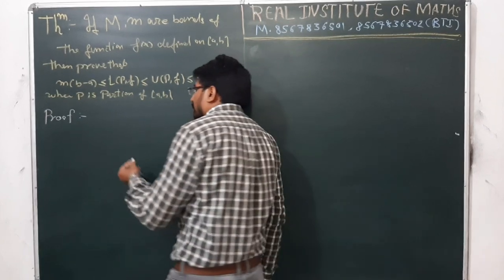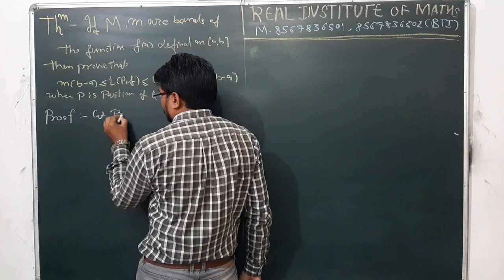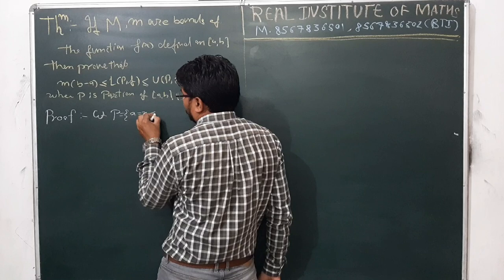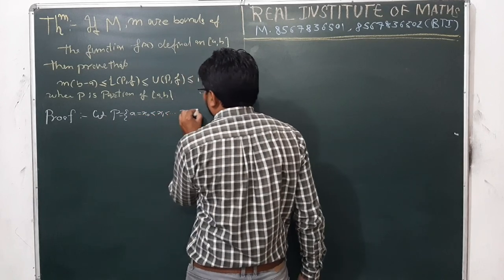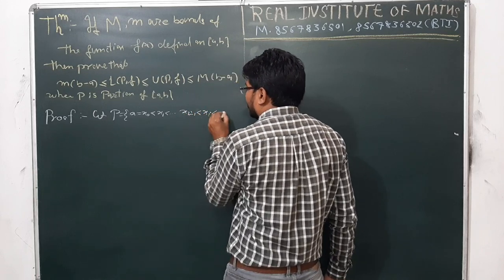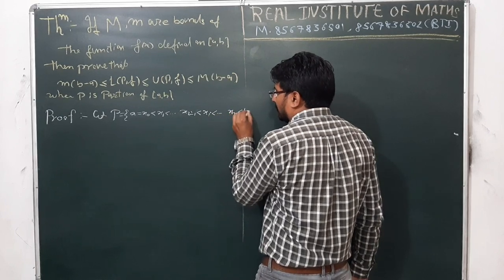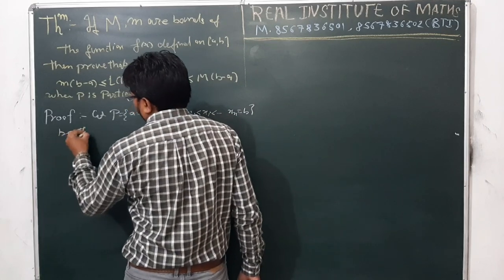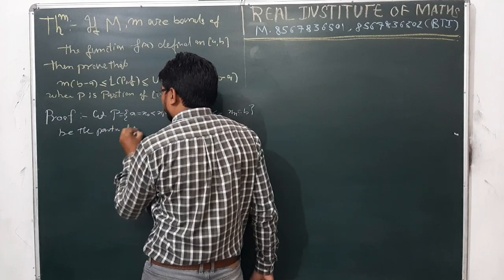So let us prove. Let P be the partition: a = x₀ < x₁ < ... < xᵢ₋₁ < xᵢ < ... < xₙ ≤ b. This is a partition of the interval [a,b].